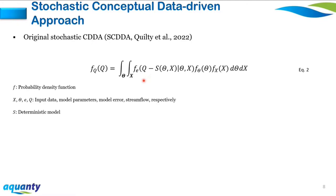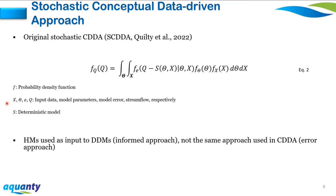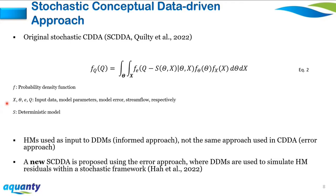The follow-up study proposed the stochastic CDDA (SCDDA) to account for various sources of uncertainties not included in the original CDDA. The SCDDA uses a blueprint to convert deterministic to stochastic models given by an equation where f represents the probability density function, and x, theta, e, and Q are input data, model parameters, model error, and streamflow, respectively, and S is the deterministic model. The caveat was that HMs were used as an implicit data-driven model — the informed approach — not the error approach used in the CDDA. This is problematic since it prevents direct comparison between CDDA and SCDDA, and training two separate data-driven models can be computationally expensive.